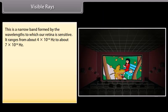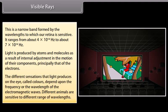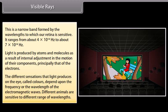Visible rays. This is a narrow band formed by the wavelengths to which our retina is sensitive. It ranges from about 4 into 10 raised to the power 14 Hz to about 7 into 10 raised to the power 14 Hz. Light is produced by atoms and molecules as a result of internal adjustment in the motion of their components, principally that of electrons. The different sensations that light produces on the eye, called colors, depend upon the frequency or the wavelength of the electromagnetic waves. Different animals are sensitive to different range of wavelengths.